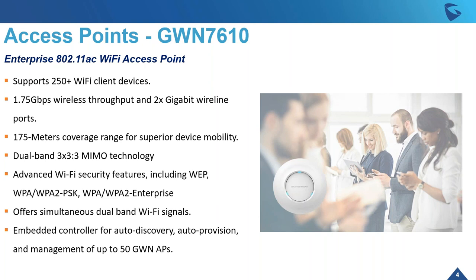For Wi-Fi security, the 7610 supports advanced features including WEP, WPA, WPA2, and WPA2 Enterprise. It offers simultaneous dual-band Wi-Fi signal, and you can create an SSID using both bands simultaneously depending on your client's deployment. All Grandstream access points, including the router, come with a controller-less feature — you don't need third-party hardware or a separate computer running controller software. The controller is embedded into the access point or router. On this particular model, you can control up to 50 additional GWN access points.